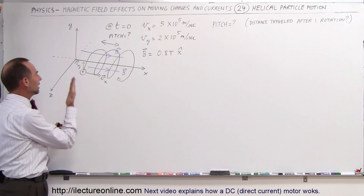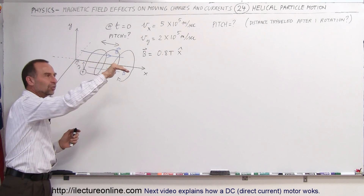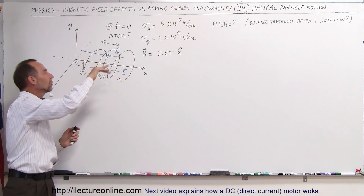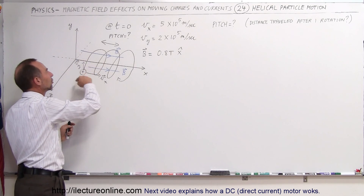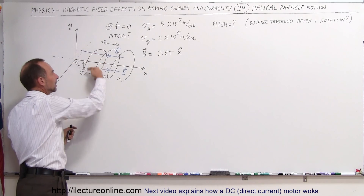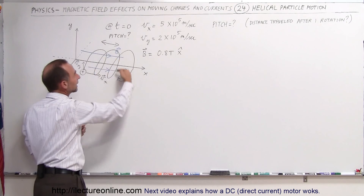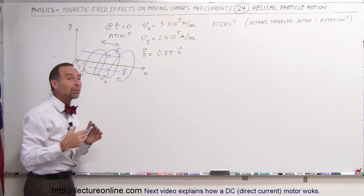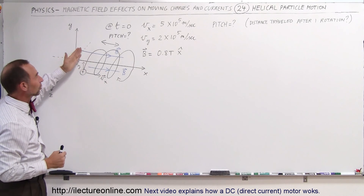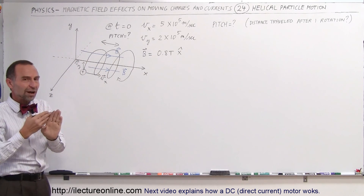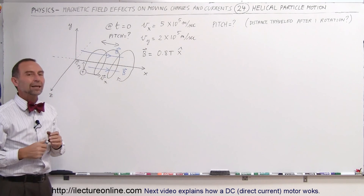Using our right hand, we take our fingers, point in the direction of the velocity straight up, and since the magnetic field is in the x direction, we point our fingers that way and we see a force in this direction. So even though the particle is moving upward, it feels a force that causes it to go around in a circular path. But at the same time, it's also moving in the x direction, which means it will have what we call helical motion. The objective of this problem is to find how far it travels when the proton moves once around in a circle — that's called the pitch.